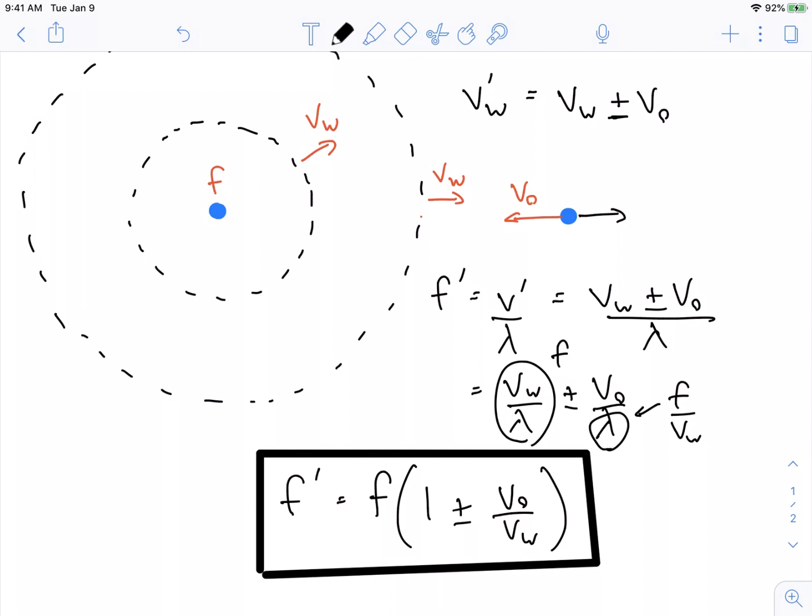If the observer is moving towards the source, the wavefronts must be hitting you quicker, so you must hear a higher frequency. You want to multiply your frequency by a number that's bigger than one, so you use the plus sign.